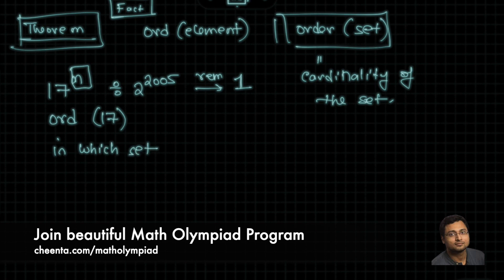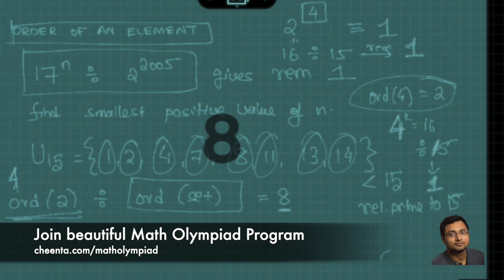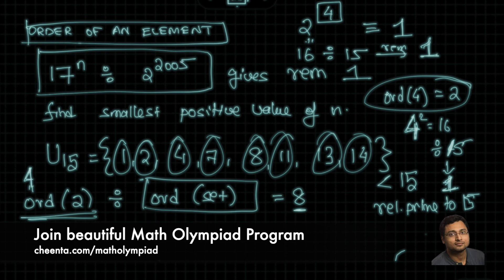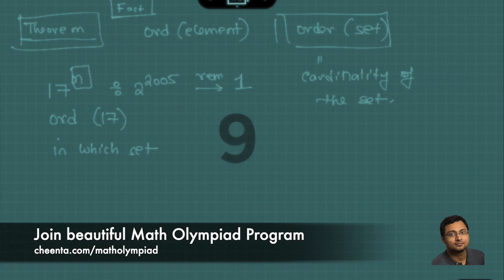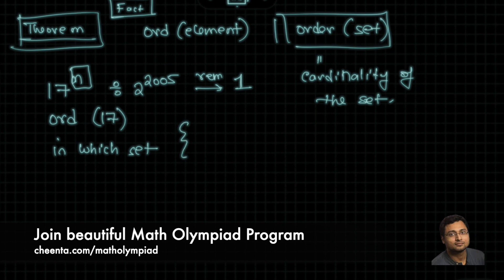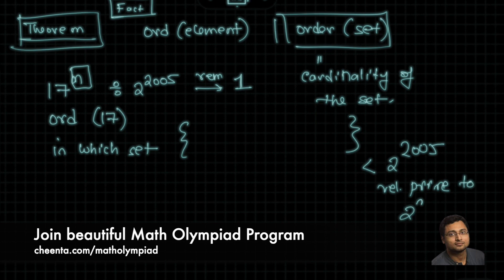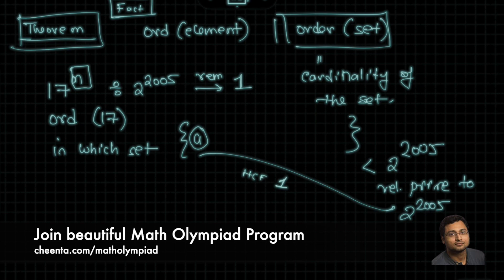You are dividing by 2 to the power 2005. Recall that in the previous case you divided by 15, so you took numbers less than 15 and relatively prime to 15. This time, dividing by 2 to the power 2005, you want numbers which are less than 2^2005 and relatively prime to 2^2005 — meaning they have HCF 1 with 2^2005 and share no common factor with it.